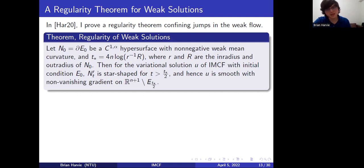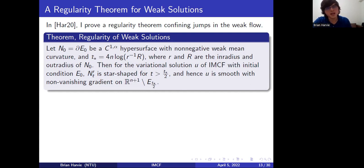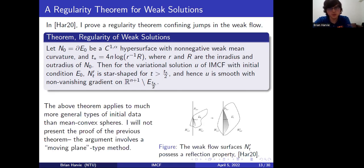I should mention that E_t is just the set {u < t}. So what I'm saying is that the weak flow surfaces must be star-shaped by an explicit time that depends on T*. And due to a uniqueness property of weak solutions, you actually have a very nicely behaved u outside E_{T*/2}. I'm not going to present the proof of this theorem in this talk — it gets really deep into the theory of weak solutions — so I'm just going to take this theorem for granted and explain its consequences.